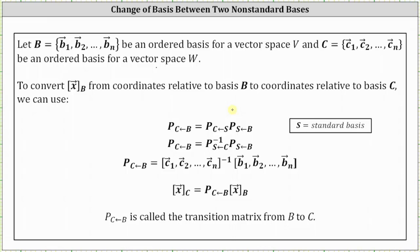Welcome to a lesson on change of basis between two non-standard bases. Let the vectors in set B be an ordered basis for a vector space V, and let the vectors in set C be an ordered basis for a vector space W. To convert a vector from coordinates relative to basis B to coordinates relative to basis C, we use the following formulas.